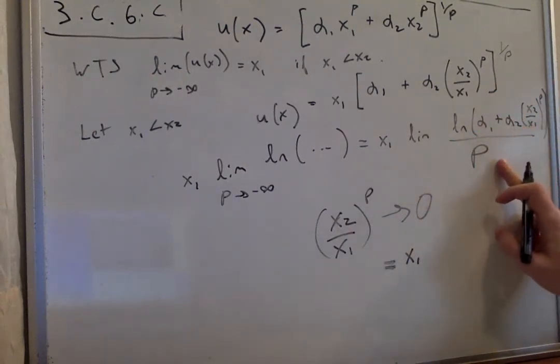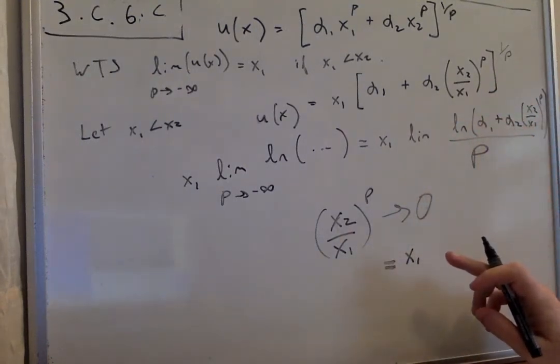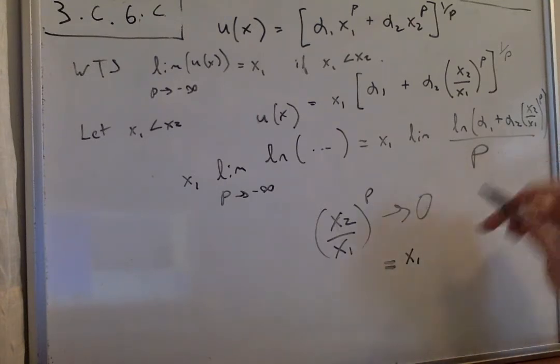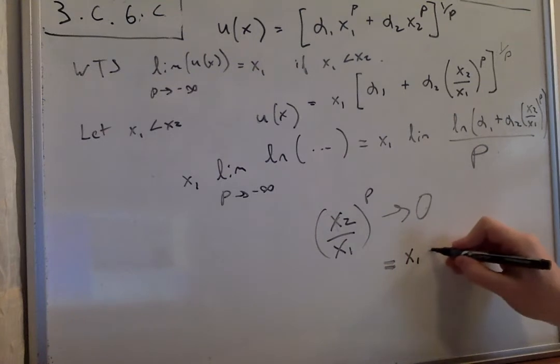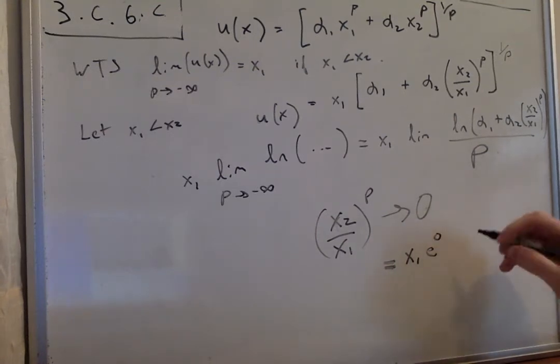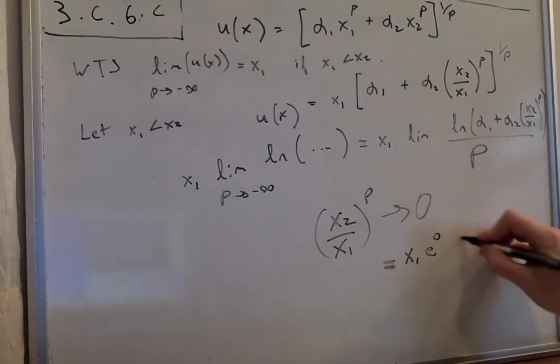This is going to go to infinity. Or sorry, this bottom is going to infinity, so the whole thing goes to zero. We want to get rid of the ln, so we raise it to e^0, and that just equals x₁.